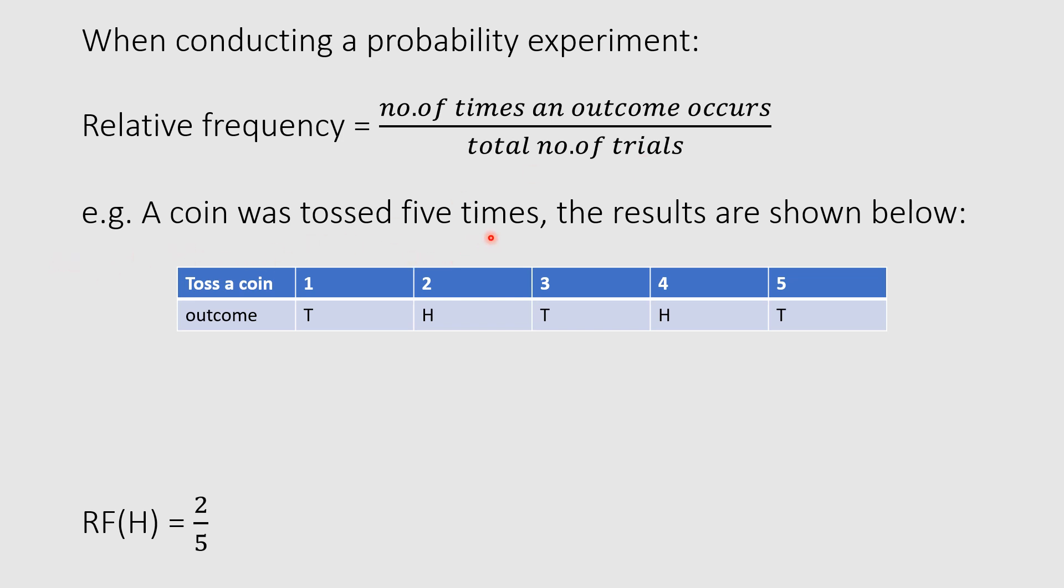For example, a coin was tossed five times. The results are shown below. My coin on the first toss landed on tails. On the second toss, the coin landed on heads, and so on. A possible question is: what is the relative frequency of landing on heads? Number of times an outcome occurs - heads occurred twice. So my answer will be two over number of trials. We conducted this experiment five times, so two over five.